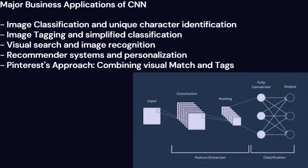Companies like Google, Facebook, and Amazon employ image tagging techniques to organize vast image databases efficiently. These tags can also be used to perform sentiment analysis on images, helping identify the emotional tone portrayed.